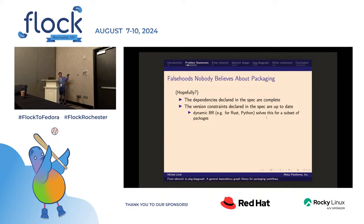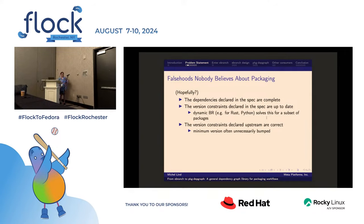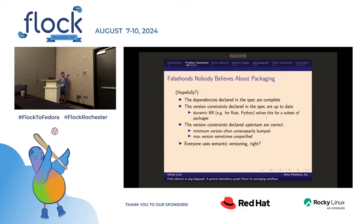There are efforts to address this. Rust and Python in Fedora generally use dynamic build requirements, so the spec doesn't list what it requires — it's computed based on upstream metadata. But you assume upstream knows what they're doing and that declared version constraints are valid. Sometimes in Rust, someone bumps everything to the latest version even though they don't actually need it. Or in Python, you see 'I need version five or above' with no upper constraint, and then version seven comes out two years later and the API isn't compatible anymore.